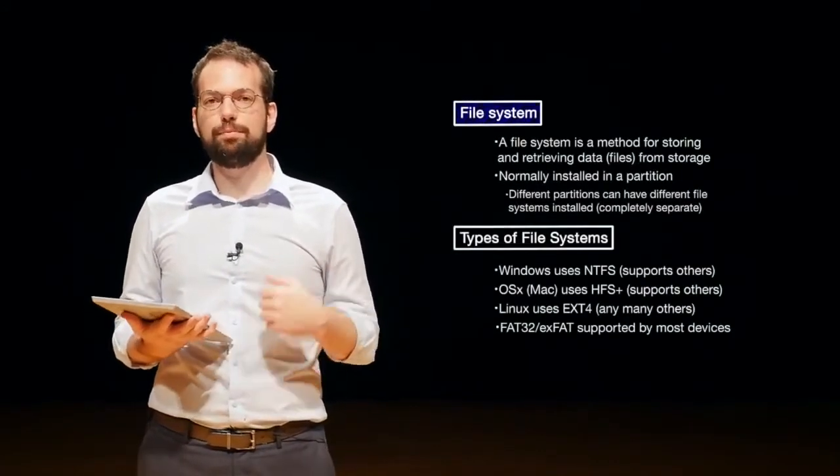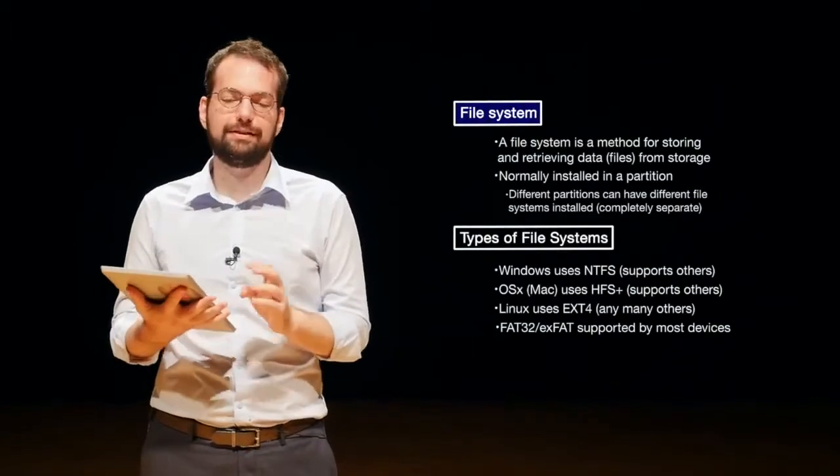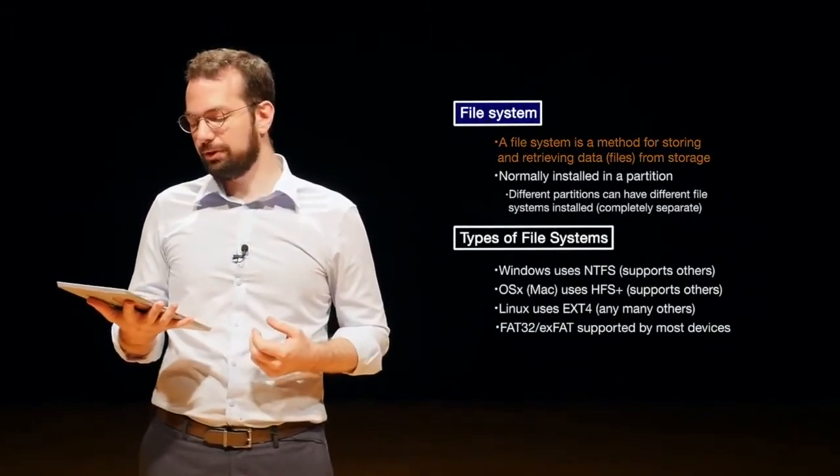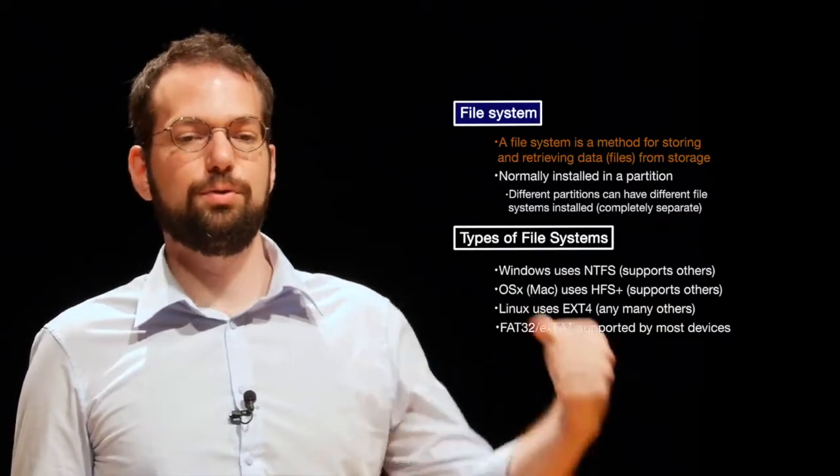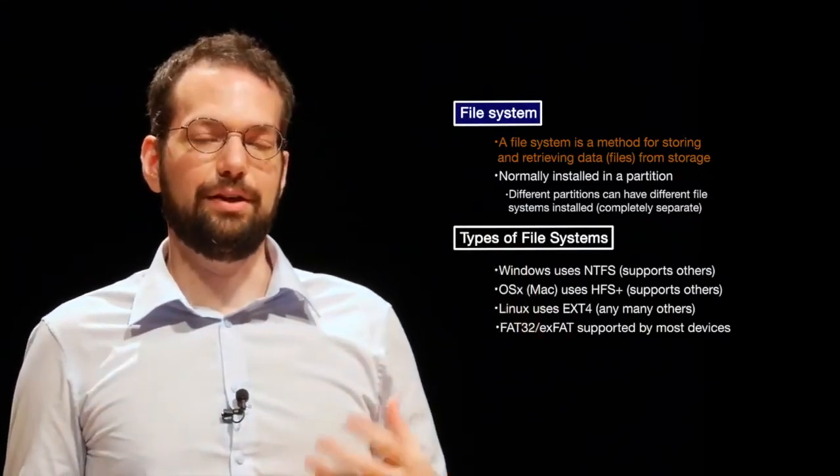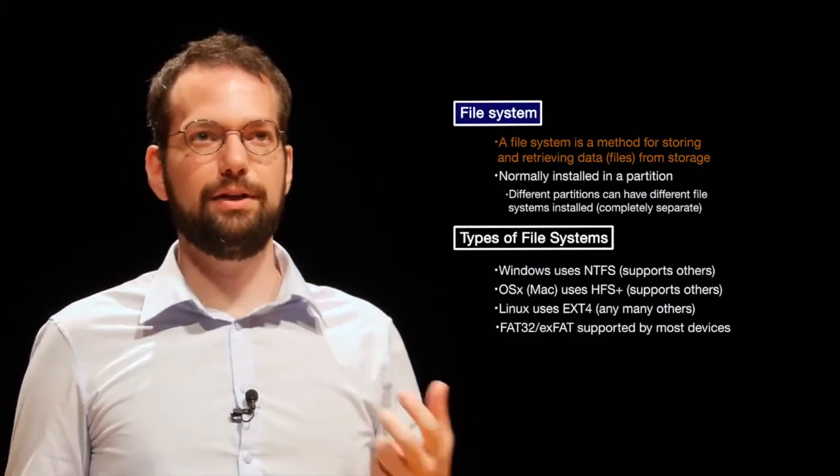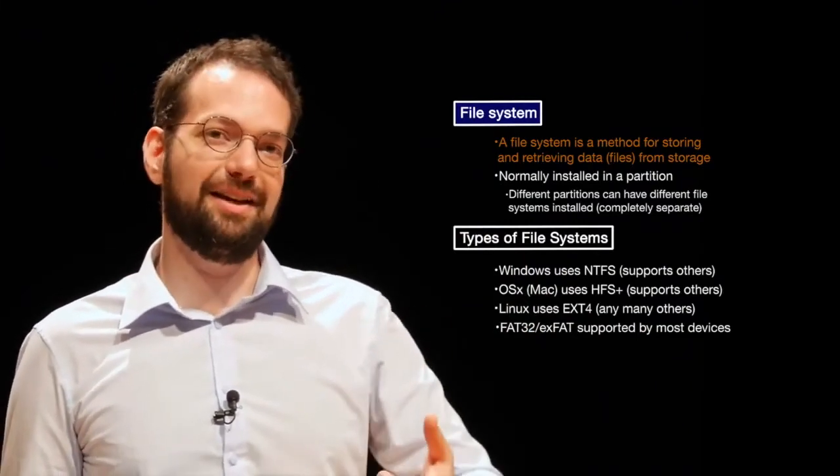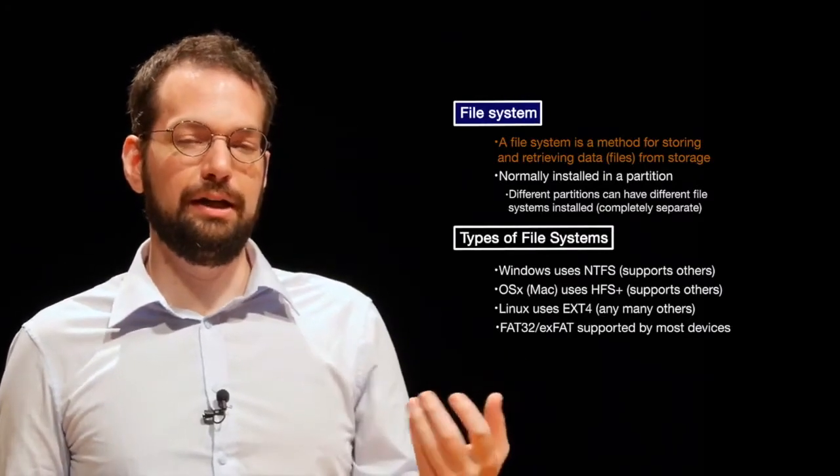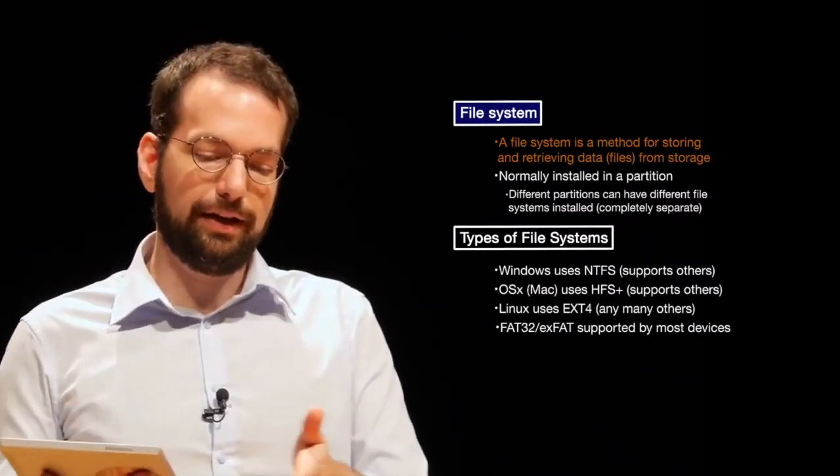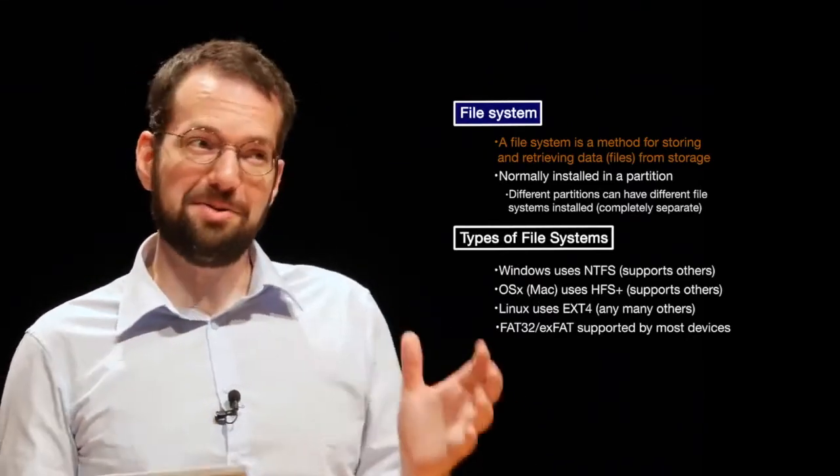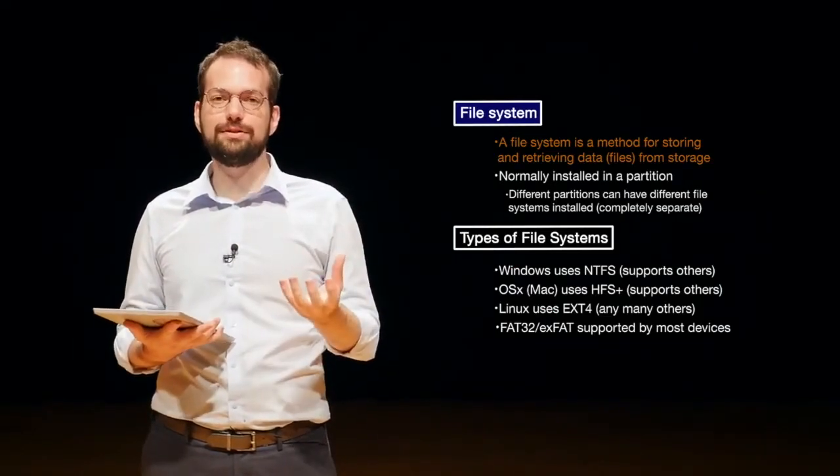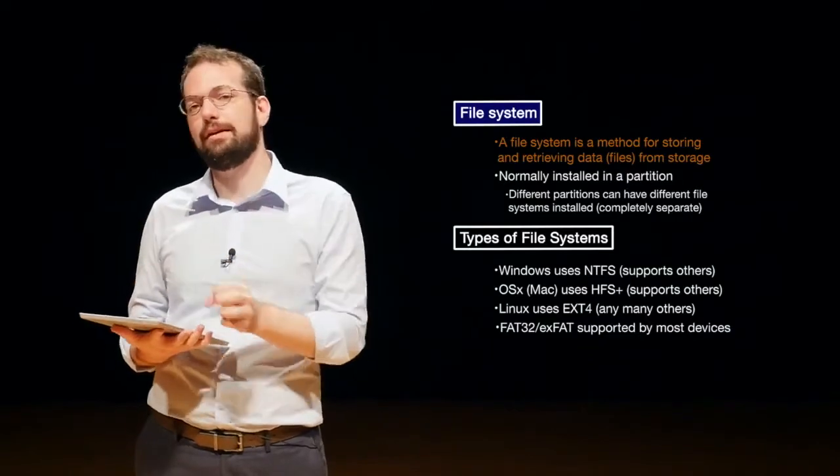After we have a partition or a logical disk, then we can put on a file system. A file system, exactly like what it sounds like, is a method for storing and retrieving data from storage. The file system itself is just a method for storing the data that you want to save and be able to retrieve later. Imagine, for example, you take a picture of your cat and you want to save that and be able to open it back up. How does your computer know where the entire data for the cat is located on the storage device?